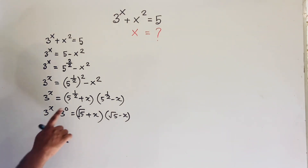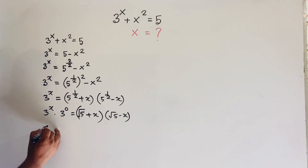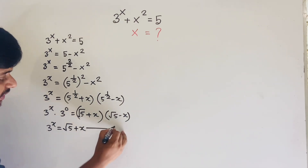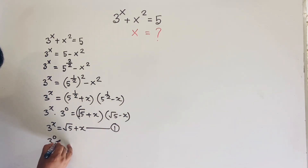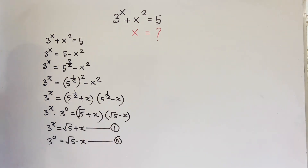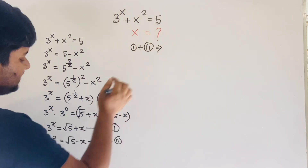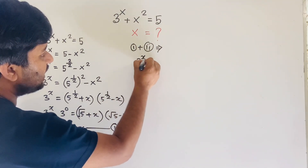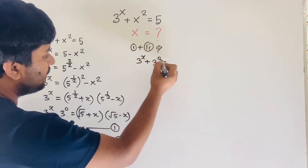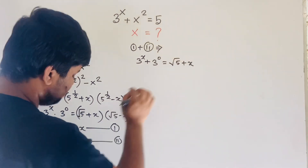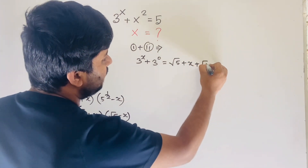Comparing both sides, I set up two equations: First equation: 3^x = √5 + x. Second equation: 3^0 = √5 - x. Now if I add the first and second equations: 3^x + 3^0 = (√5 + x) + (√5 - x).